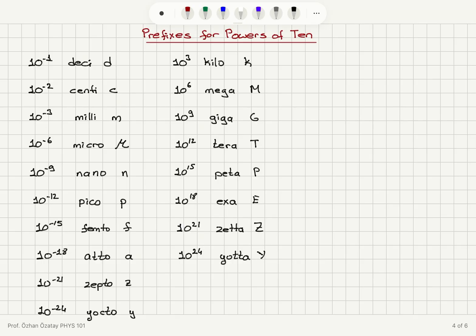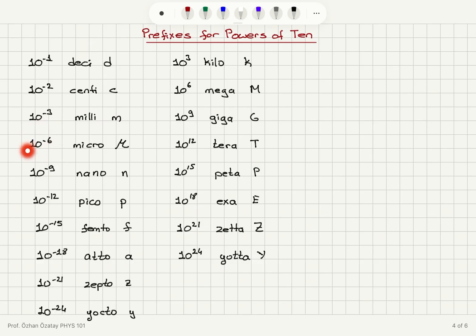These prefixes for powers of 10 are important when talking about quantities. 10⁻¹ is deci (d), so one decimeter is 10⁻¹ meters. 10⁻² is centi, so one centimeter is 10⁻² meters. 10⁻³ is milli. 10⁻⁶ is micro, 10⁻⁹ is nano, 10⁻¹² is pico, 10⁻¹⁵ is femto, 10⁻¹⁸ is atto, 10⁻²¹ is zepto, and 10⁻²⁴ is yokto.